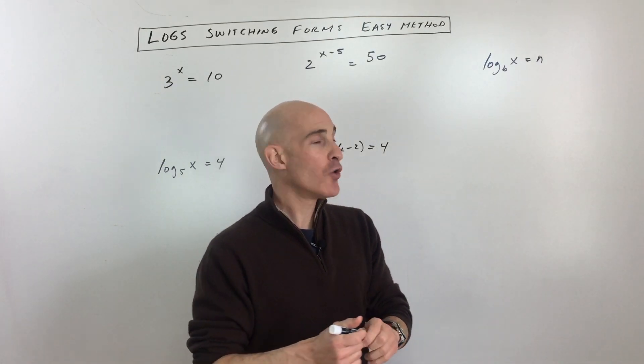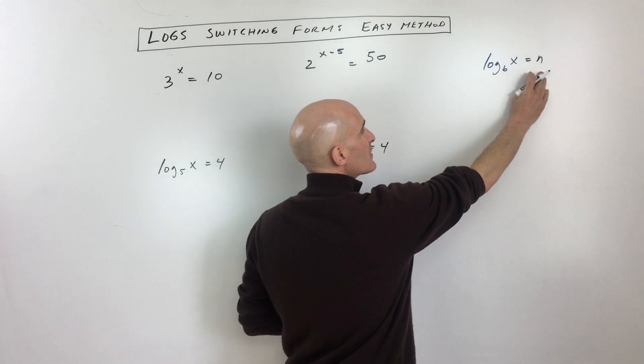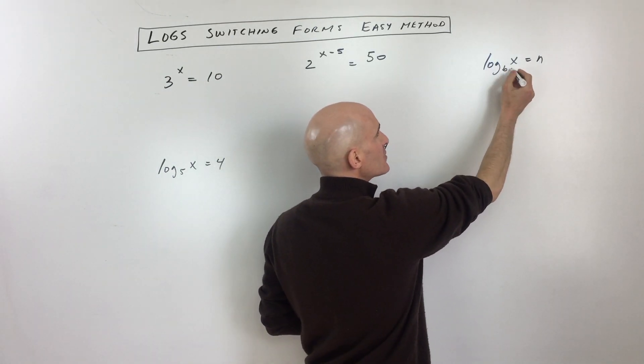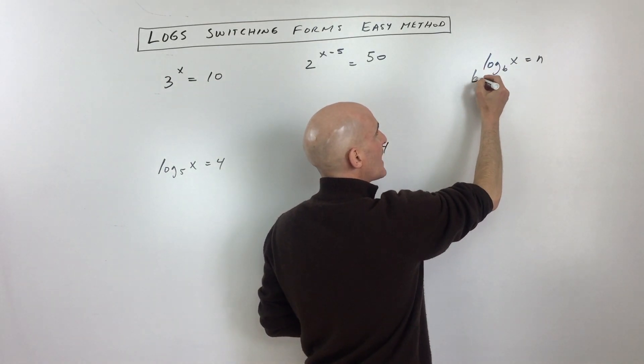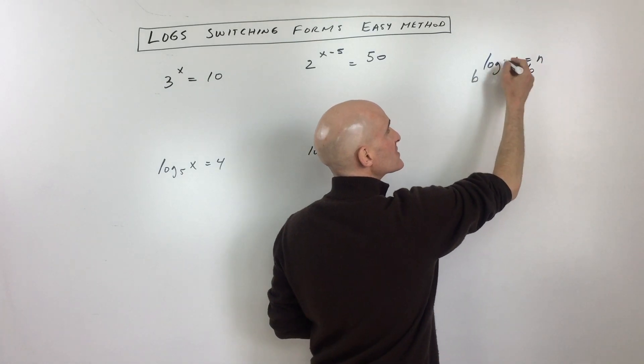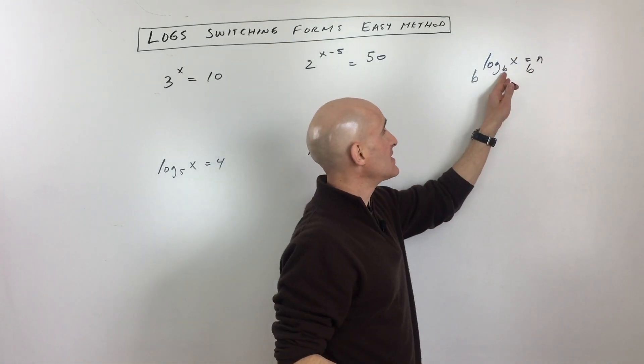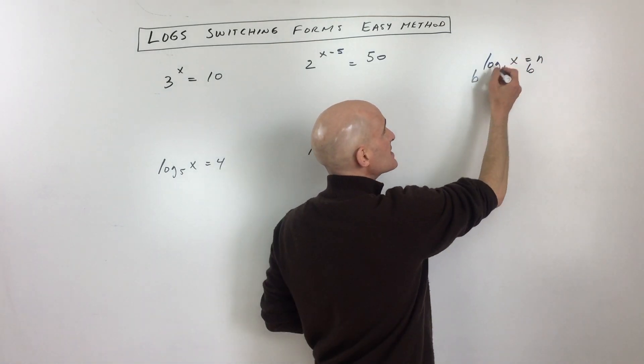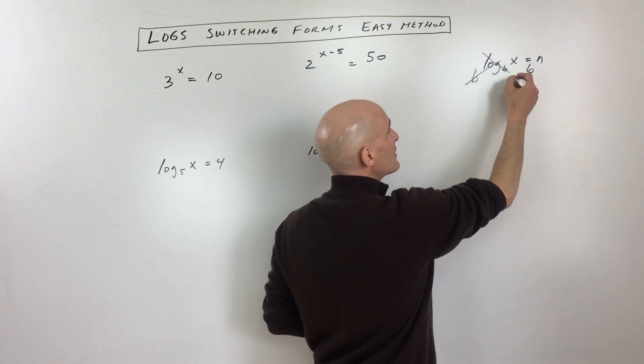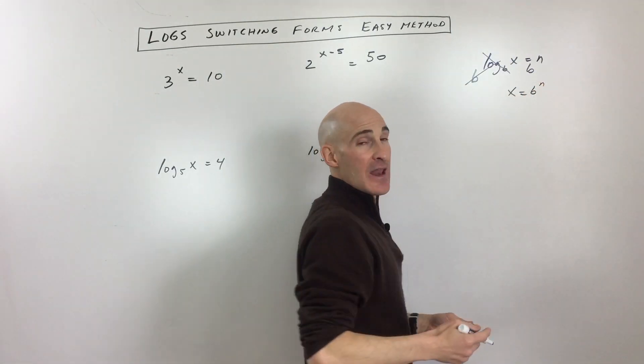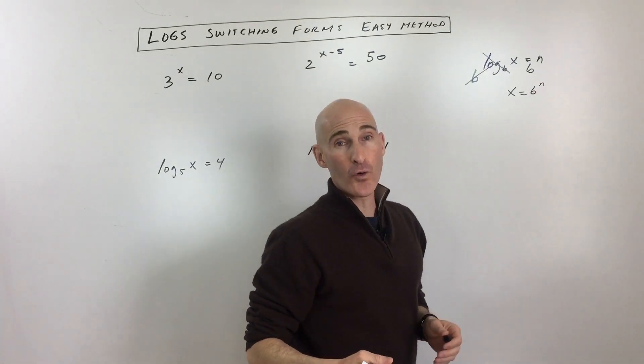They undo one another. So what you can do when you're given something in this form like this is instead of taking the log base b of x, you can exponentiate both sides using the same base here. So this is raising it to this power and what happens is these are inverses, they undo one another, and now you have it in exponential form.